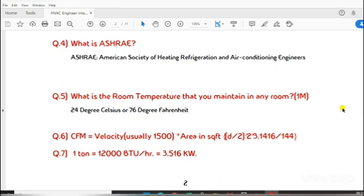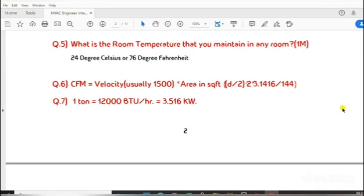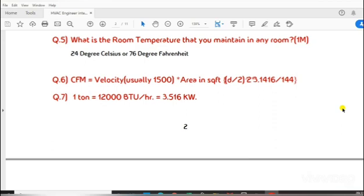Question 6: CFM equals velocity, usually 1,500, times area in square feet. Question 7: 1 ton equals 12,000 BTU/hour equals 3.516 kilowatt.